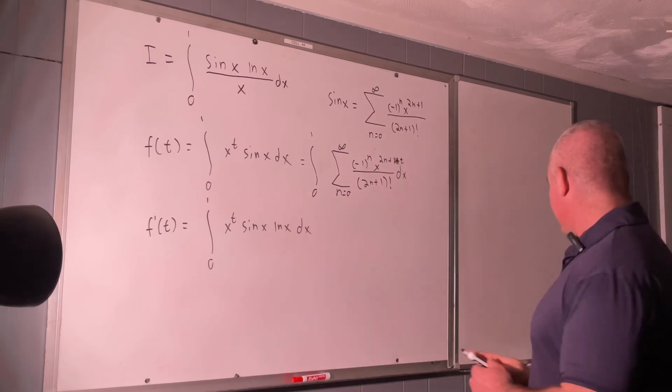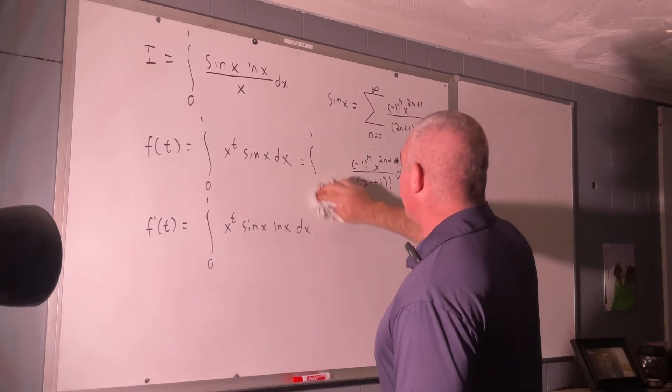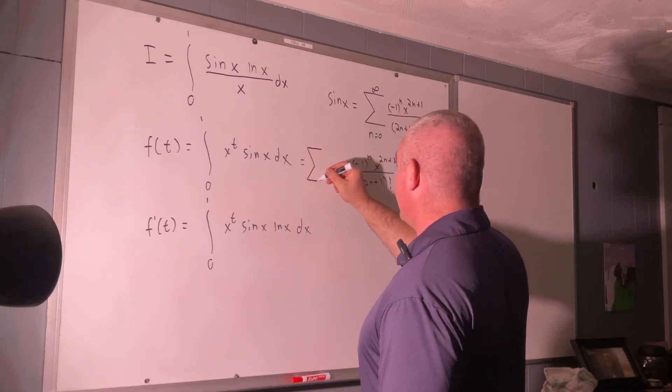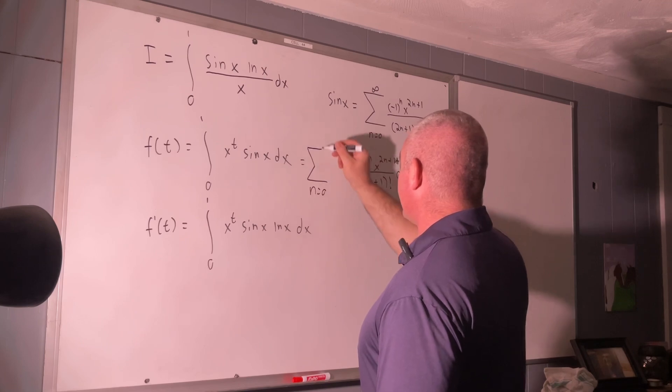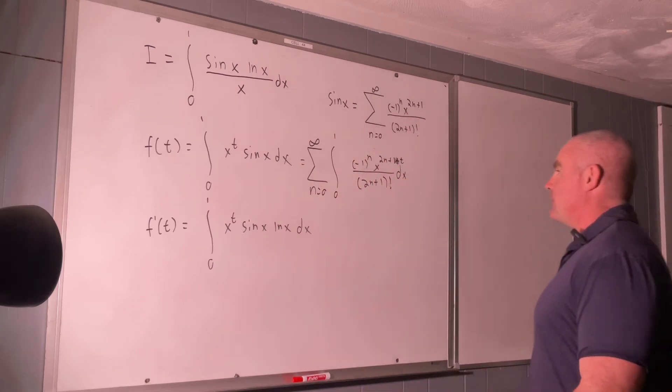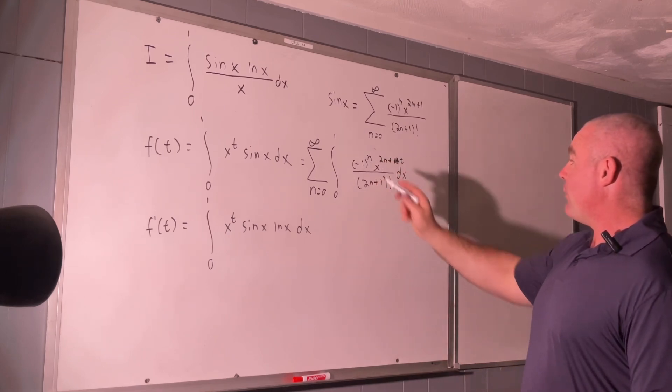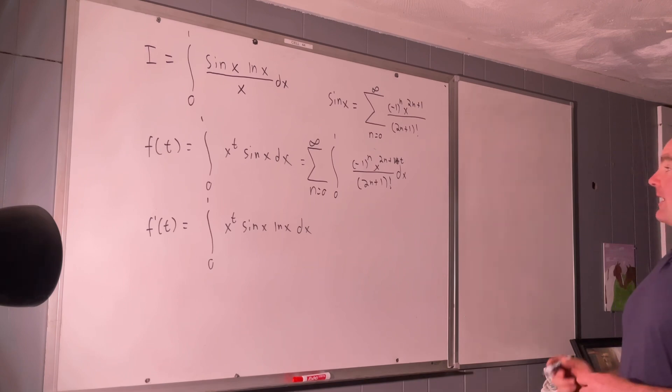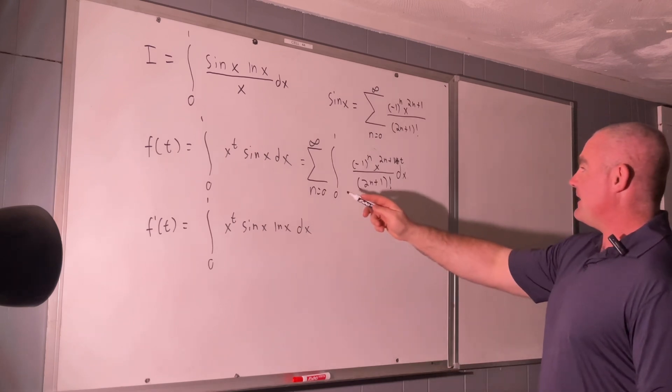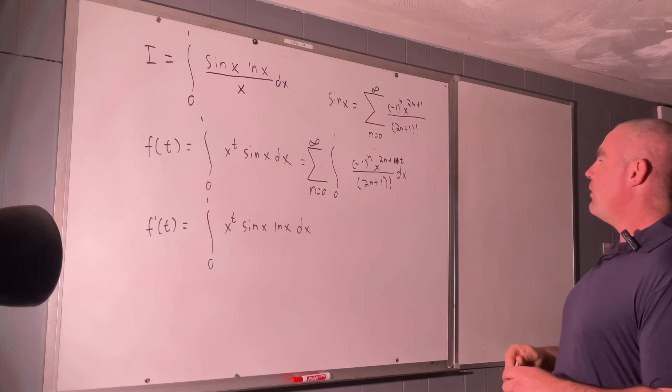And then, we can switch the summation and integration notation here, giving us the sum as n goes from 0 to infinity of the integral from 0 to 1 of this thing, integrated with respect to x. And, with respect to x, this negative 1 to the n over 2n plus 1 factorial, that's a constant. That can come right outside the integral.